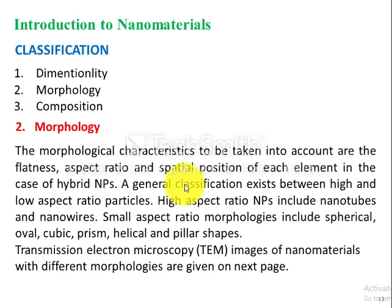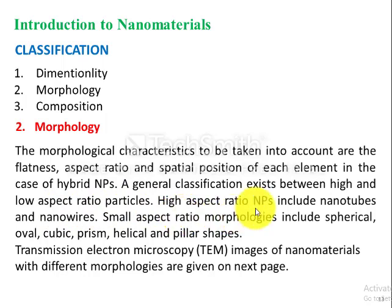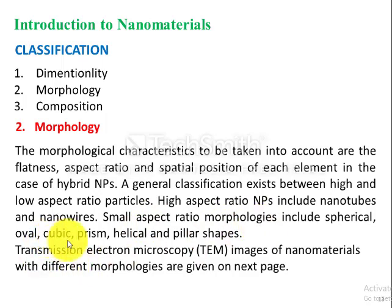Nanomaterials can also be classified on the basis of their morphology. The morphological characteristics to be taken into account are flatness, aspect ratio, and spatial position of each element — especially in the case of hybrid nanoparticles. A general classification exists between high and low aspect ratio particles. High aspect ratio nanoparticles include nanotubes and nanowires, while low aspect ratio nanoparticles include spherical, oval, cubic, prismatic, helical, and pillar-shaped nanoparticles.